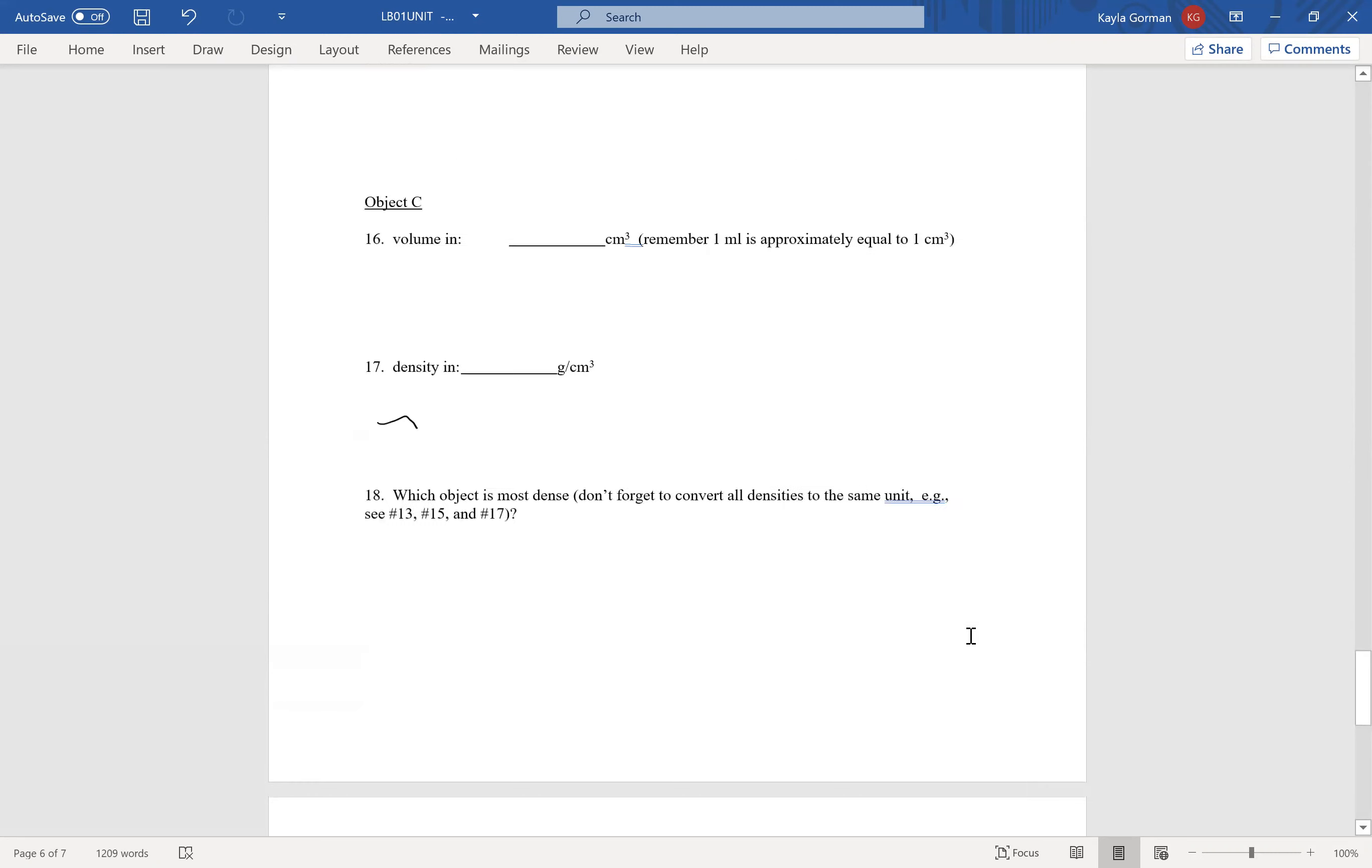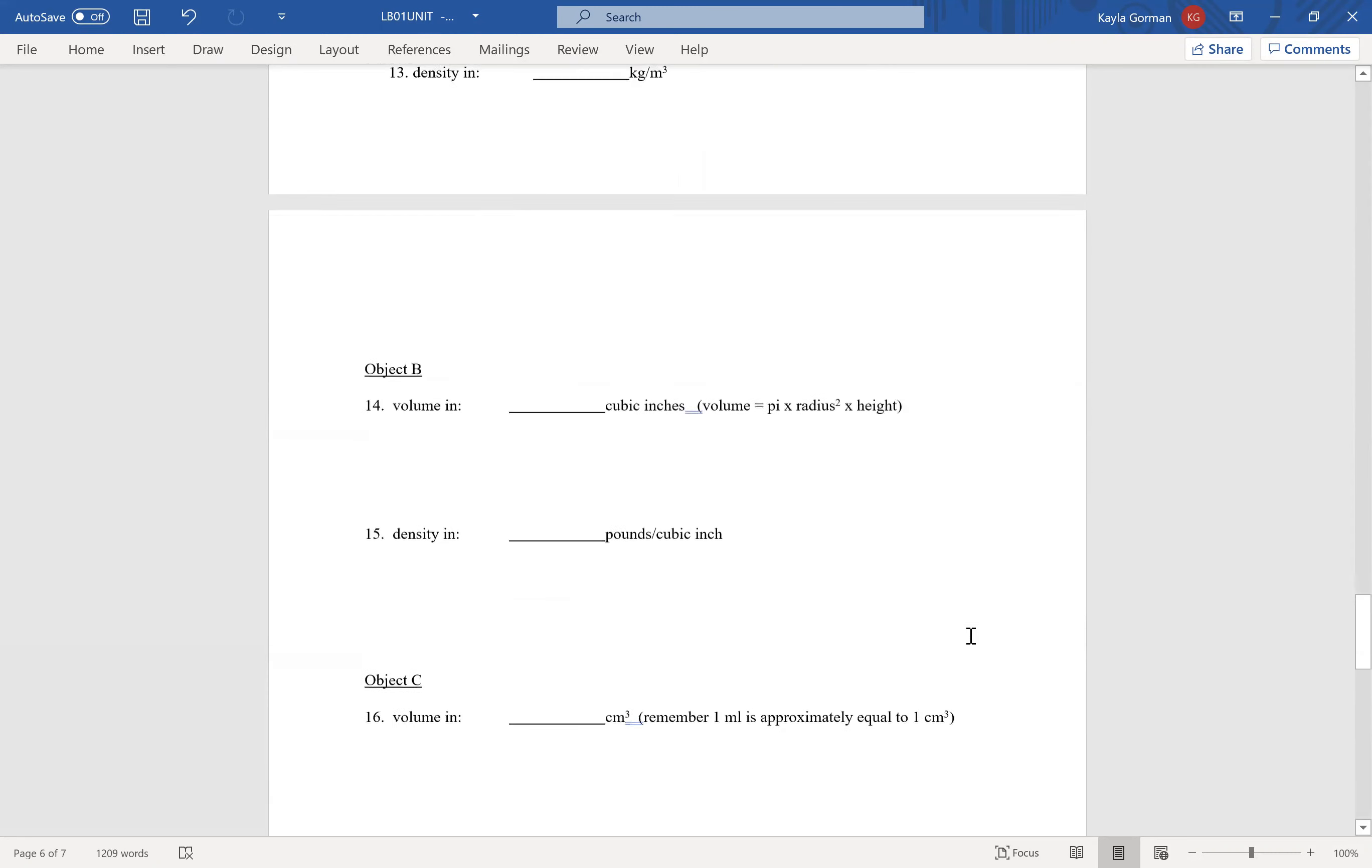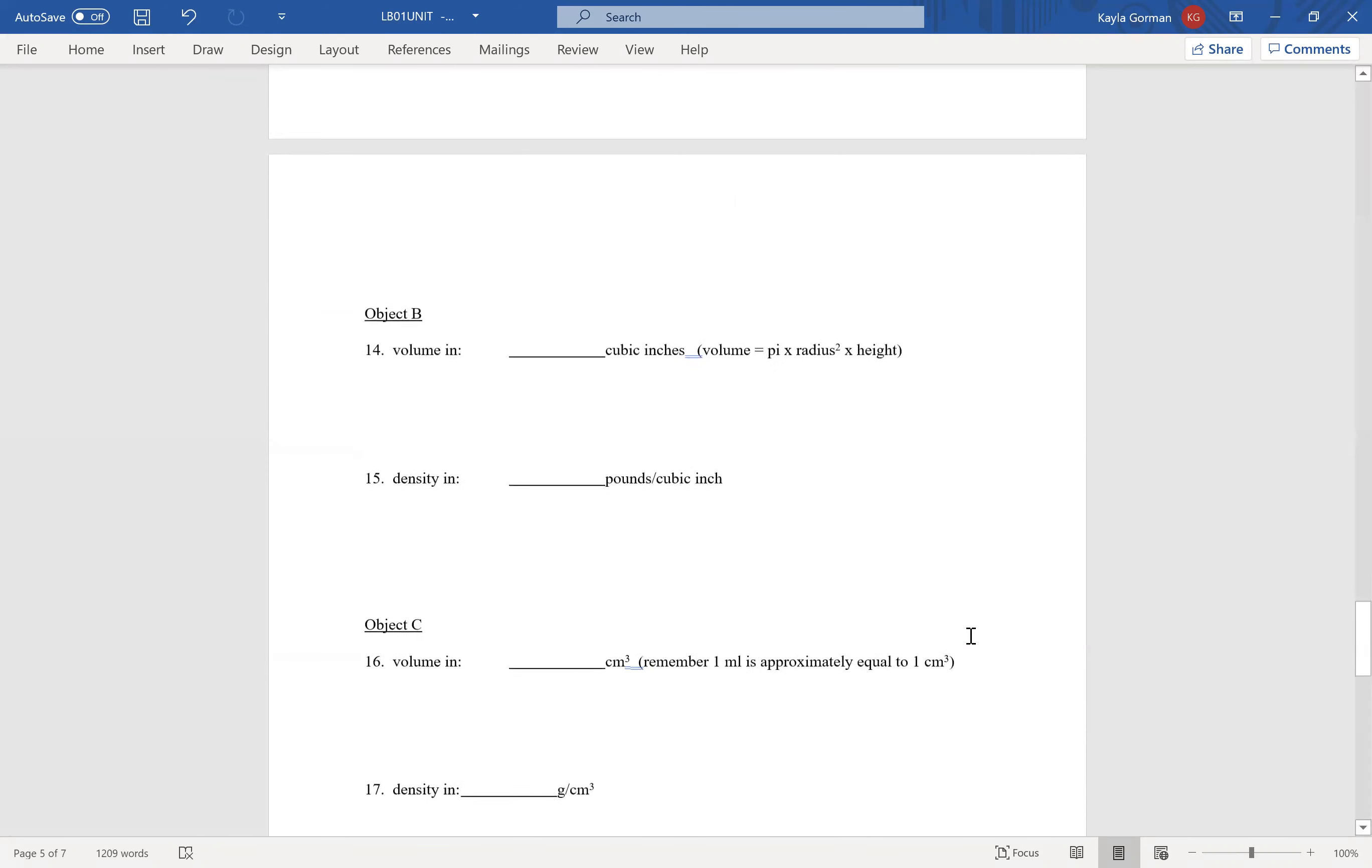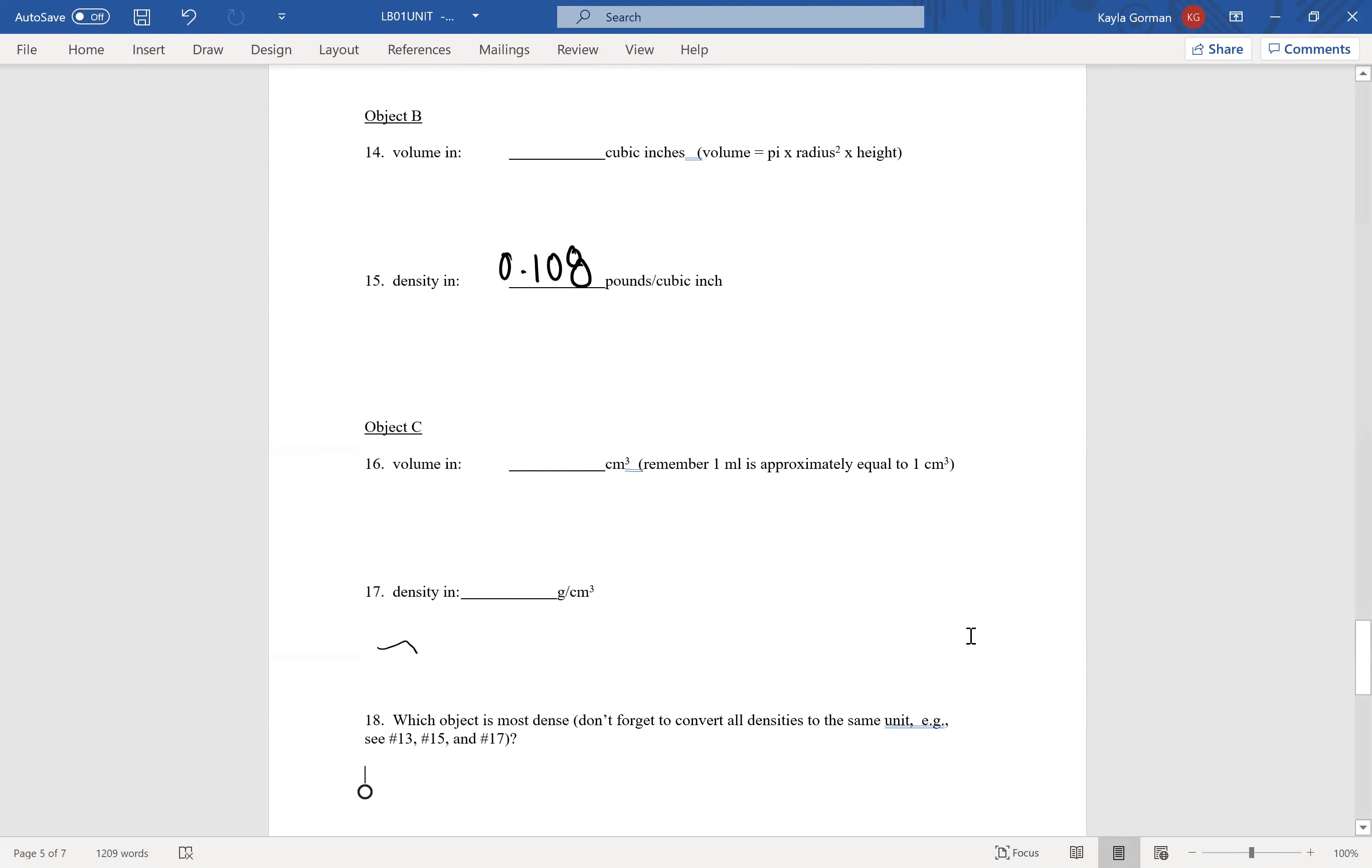For number 18 they're asking us which object is most dense. So remember the three objects we just went over are Object A, B, and C, and we did find the density for them. Object A's density ended up being 489.20, Object B's density ended up being 0.18 pounds per cubic inch, and Object C we had 2.76.